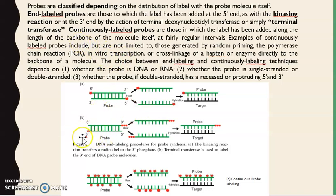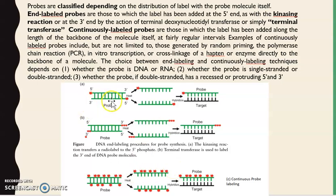For 3-prime labeling, terminal transferase can be used to transfer a label molecule to the 3-prime free hydroxyl end. In continuously labeled probes, label molecules are added continuously on the backbone of the probe. This labeling method is used in PCR or through cross-linkage of hapten or enzyme directly added to the probe backbone. The choice between end labeling and continuous labeling depends on whether the probe is DNA or RNA, single-stranded or double-stranded.